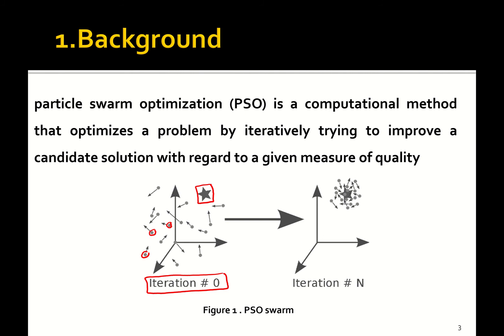Every particle in the swarm, during the search process, will try to fly in the space toward the best location. Over time, we can see the whole swarm collapse and converge toward the best location, as shown here. This is the key idea of the standard PSO: a number of particles form the swarm and all move toward the best location.